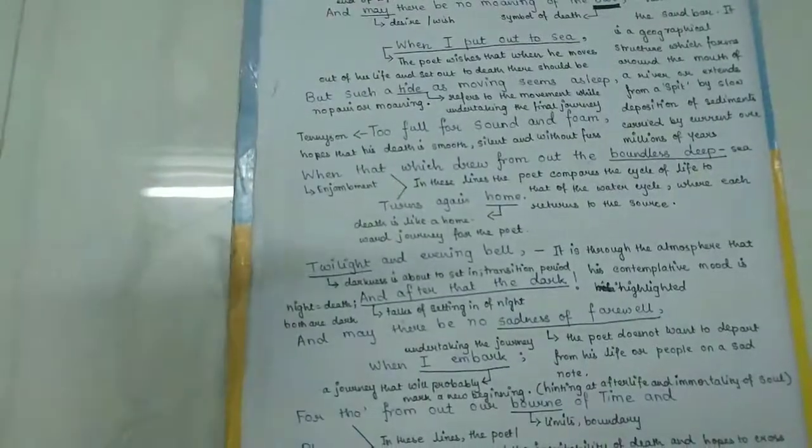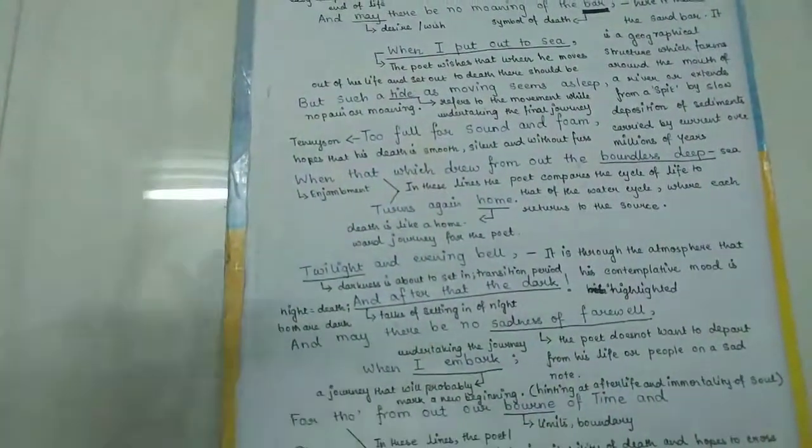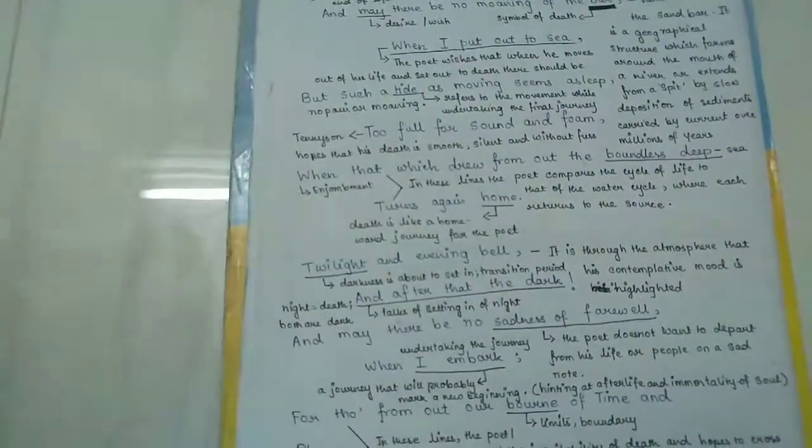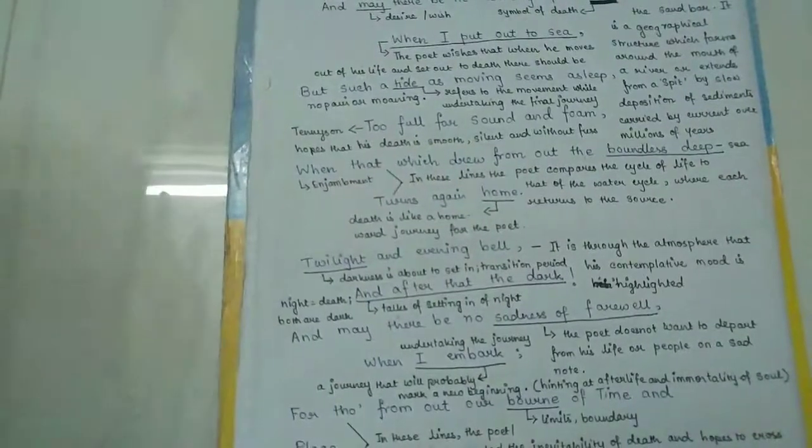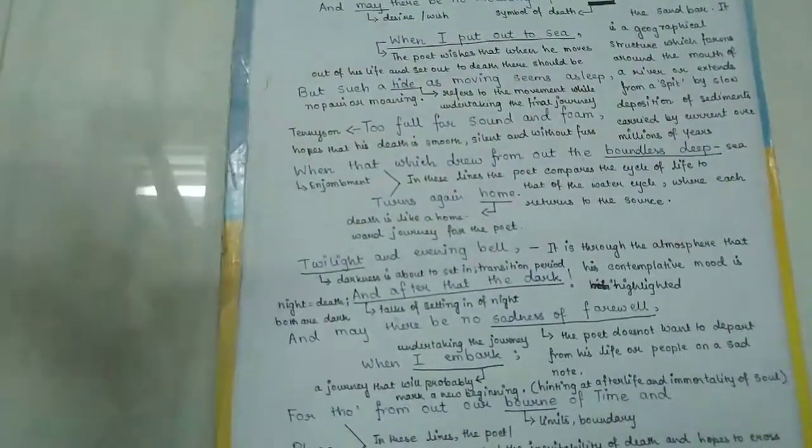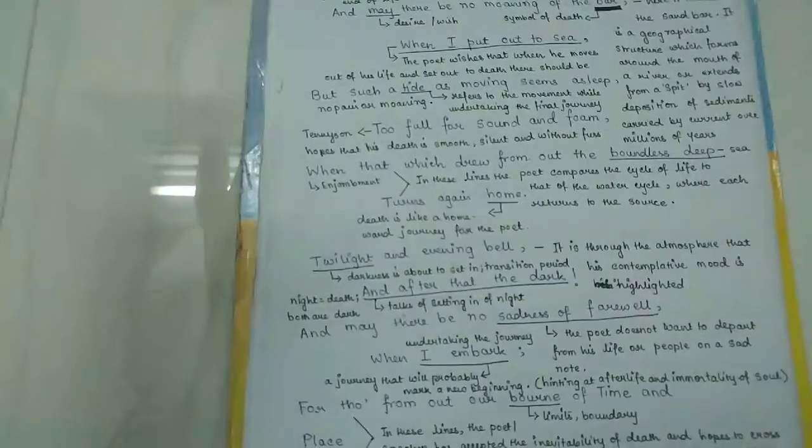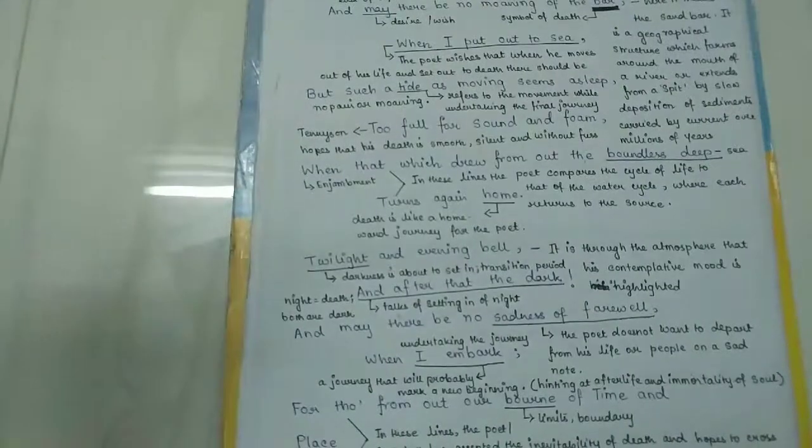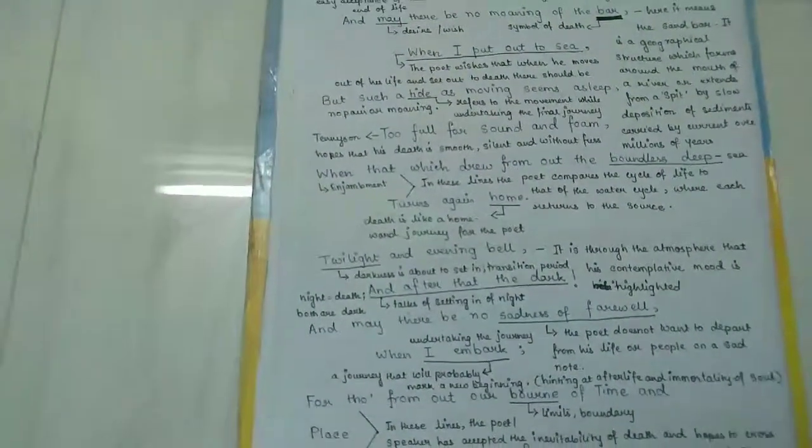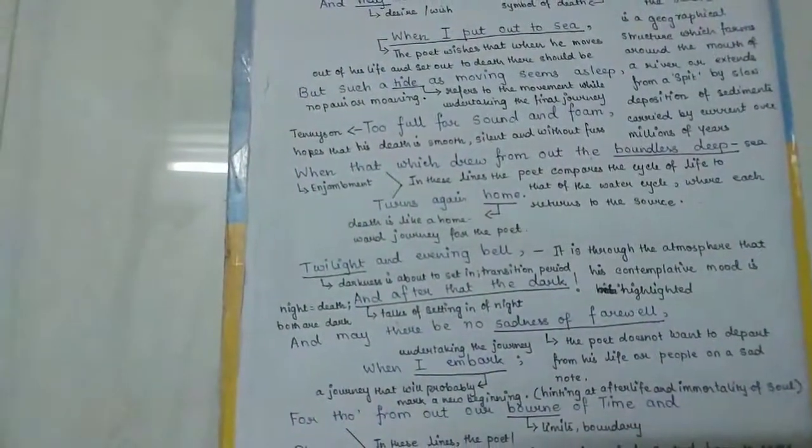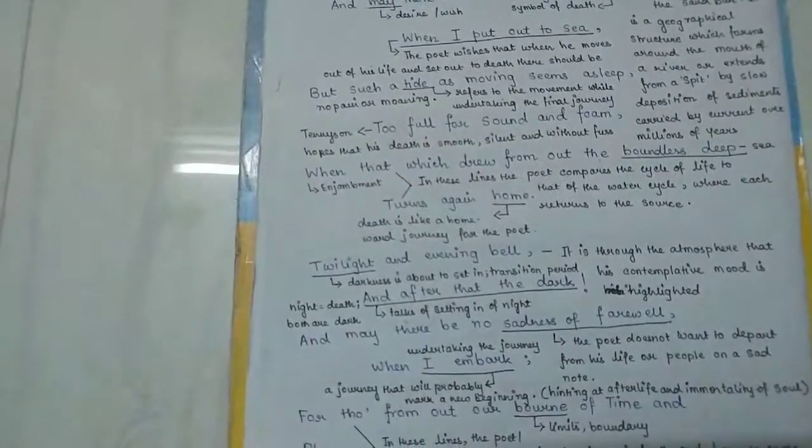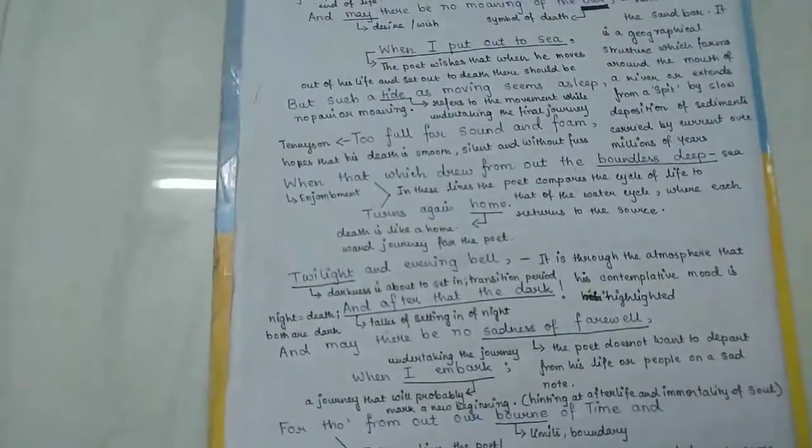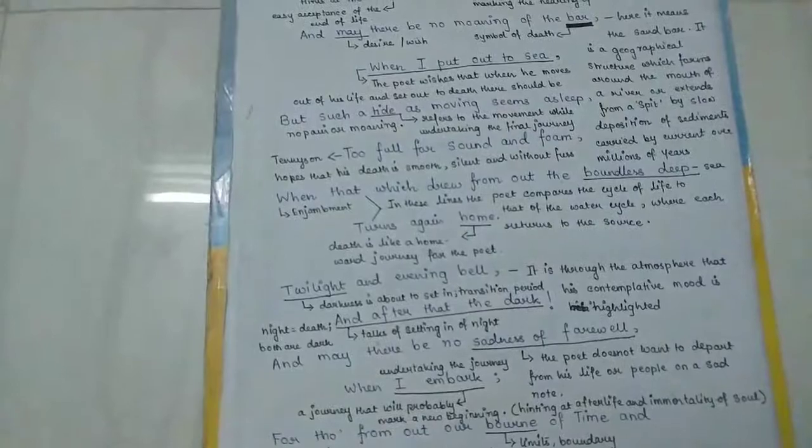Tennyson is talking about the previous stage before death sets in. In Because I Could Not Stop for Death by Dickinson, she talks of her journey with death in death's carriage.